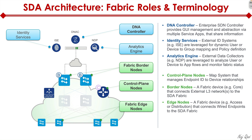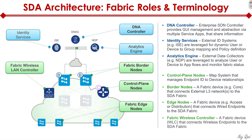Edge nodes are the access switches — analogous to your access layer switches. This is where wired endpoints plug into the network and devices are onboarded. We also have the fabric wireless controller, which is a wireless LAN controller where all wireless endpoints are terminated, controlled, and managed.